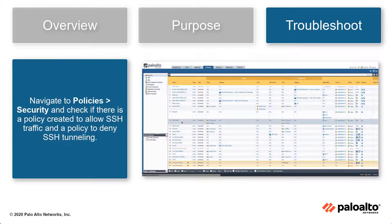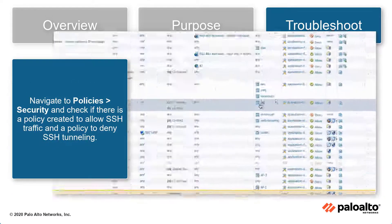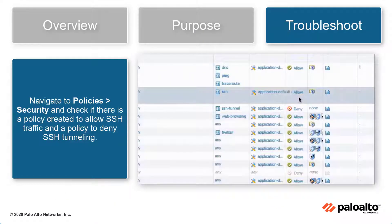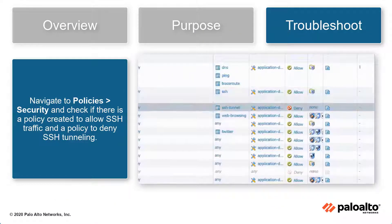Next, navigate to Policy Security. Check that there is a policy to allow SSH traffic and a policy to deny SSH tunneling.